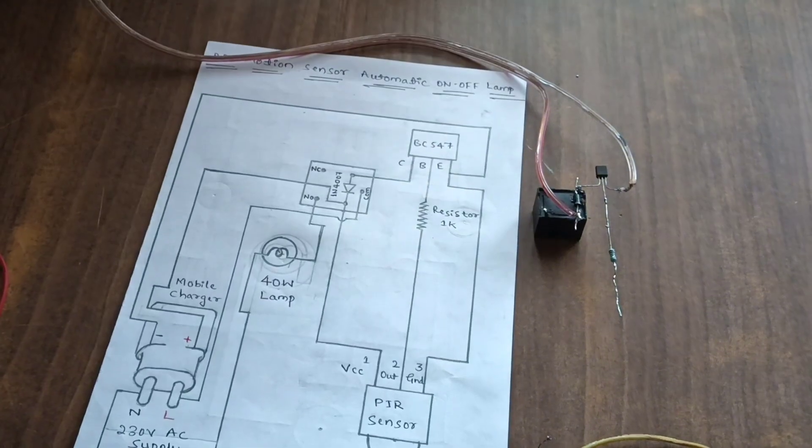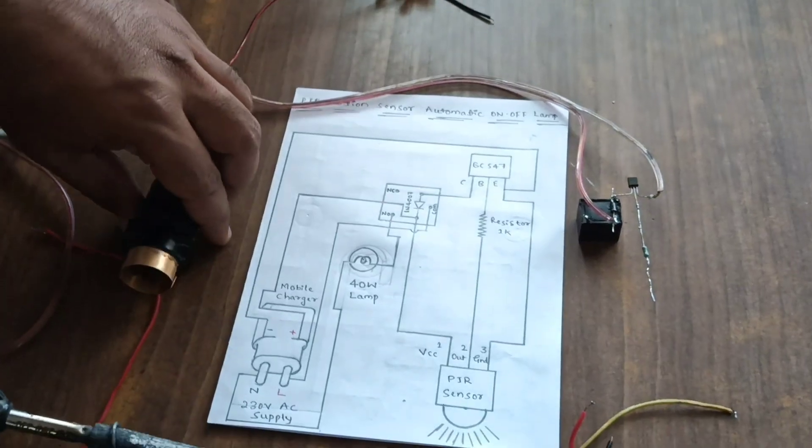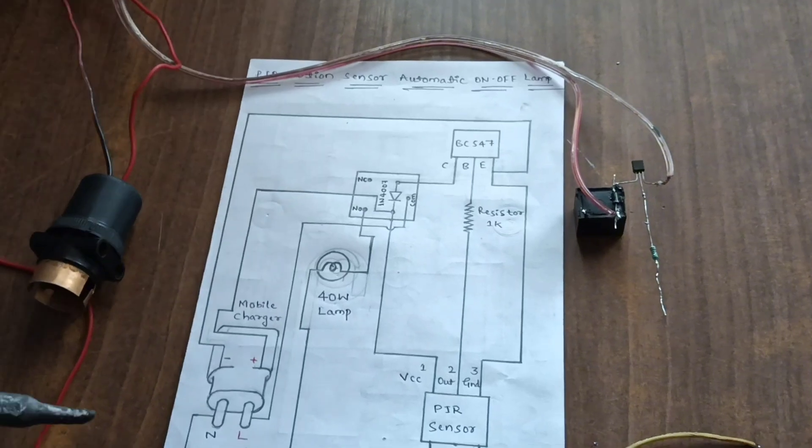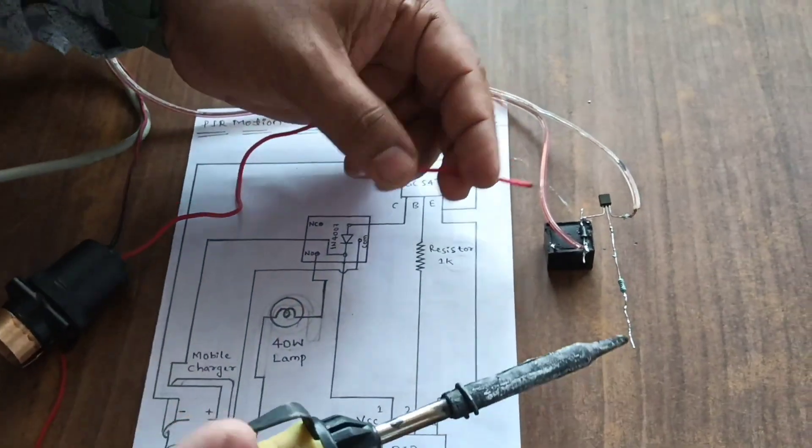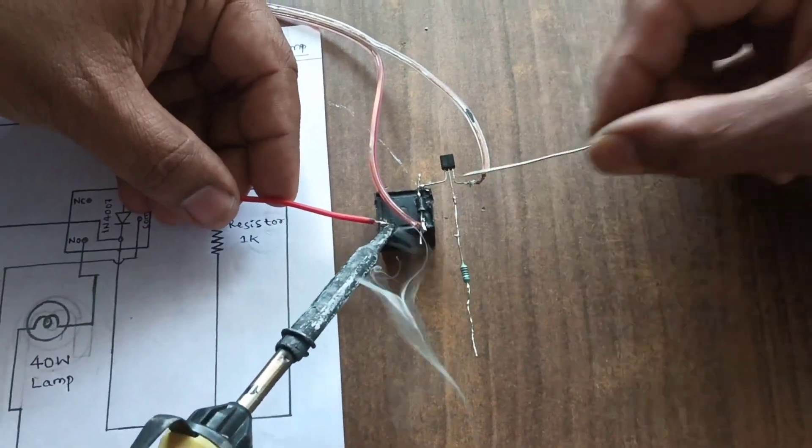Take the holder. The holder is connected, one point of the holder is connected to NO of the relay. This is the NO of the relay.